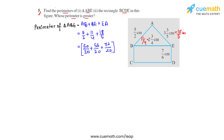Now that all denominators are 20, we simply add the numerators: 50 plus 55 plus 72 gives us 177. So the perimeter of triangle ABE is 177/20 centimeters.